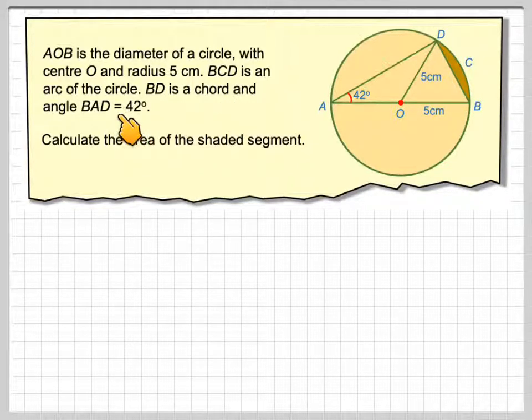BCD is an arc of the circle. BD is a chord and angle BAD is 42 degrees. Calculate the area of the shaded segment, which is this one here.